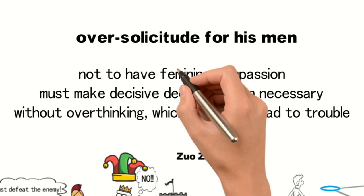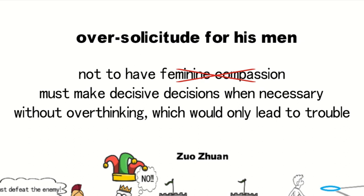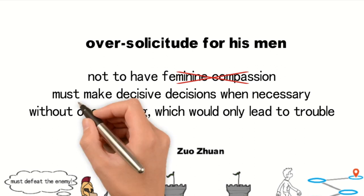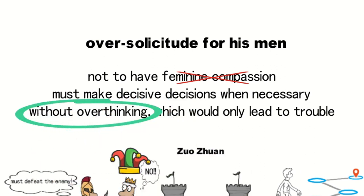So, one must not have feminine compassion. The ultimate goal on the battlefield is victory, and one must have the quality of making swift decisions, without excessive worries, leading to the loss of the best opportunities.